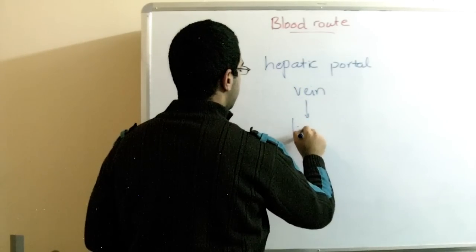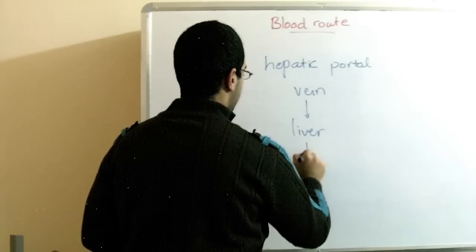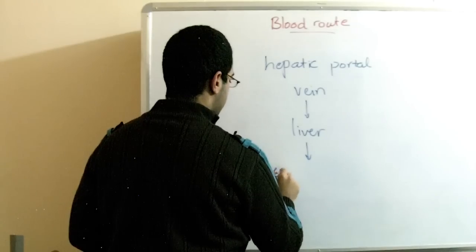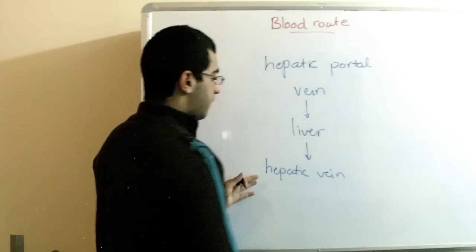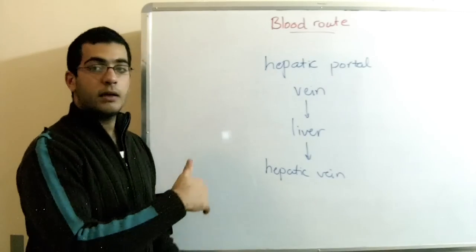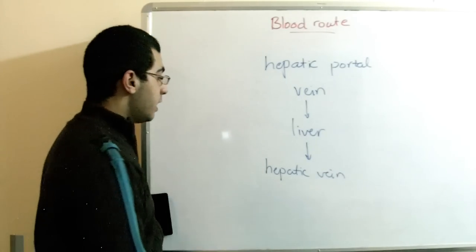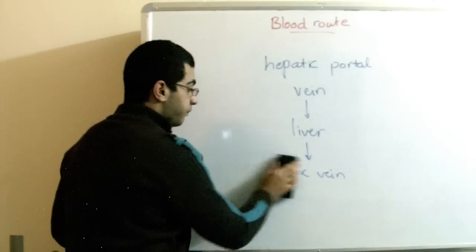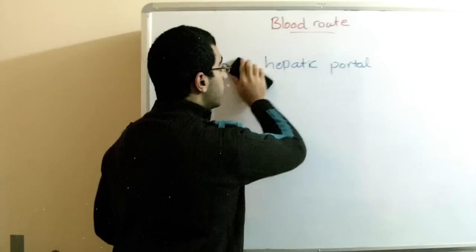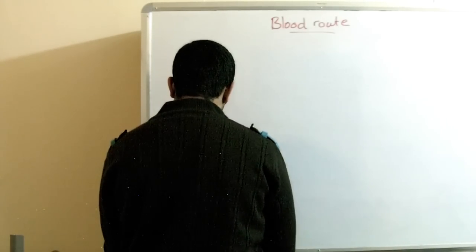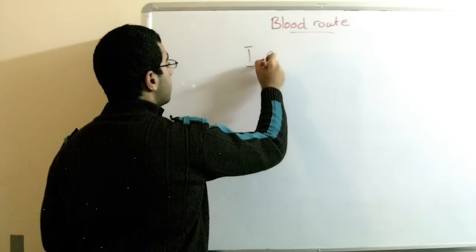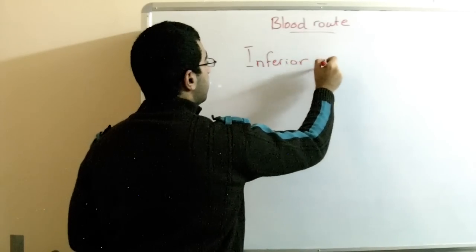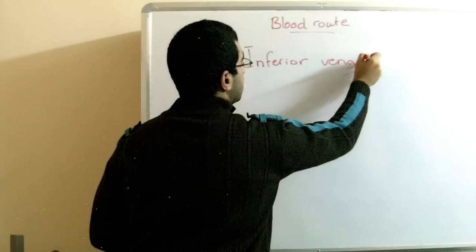Then to the liver, then to the hepatic vein. This is the main liver vein when they go outside from the liver. And at last, they are emptied through the inferior vena cava.